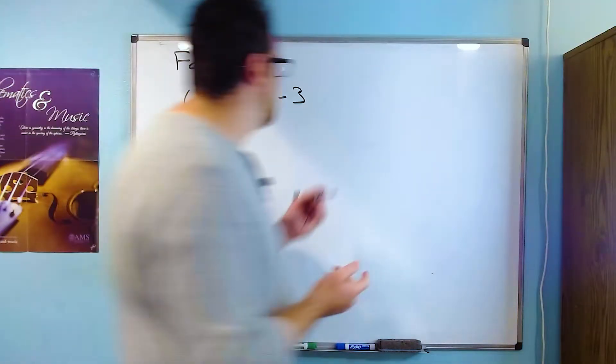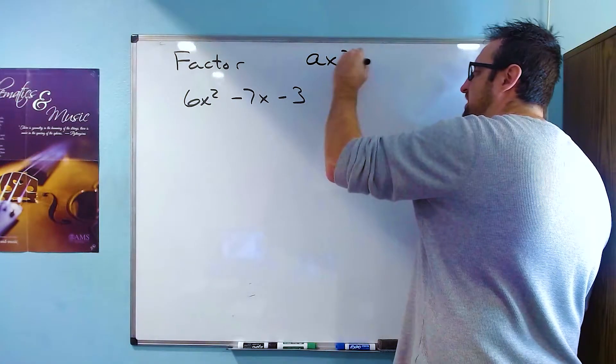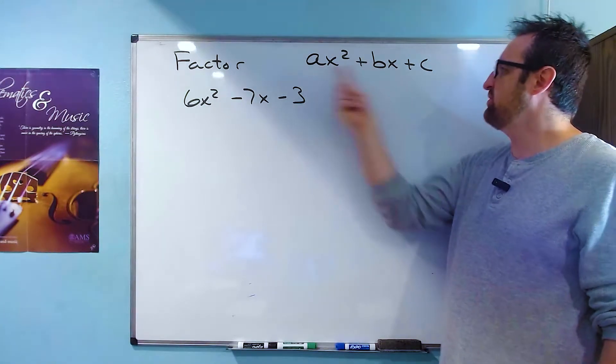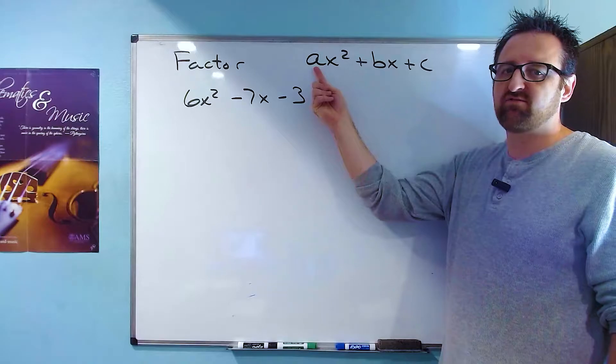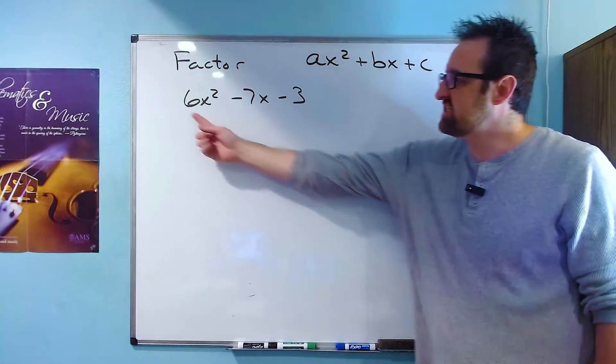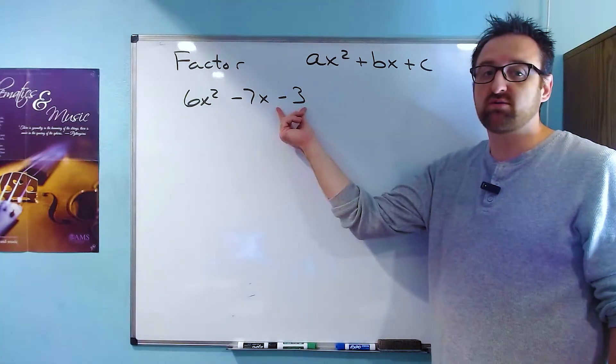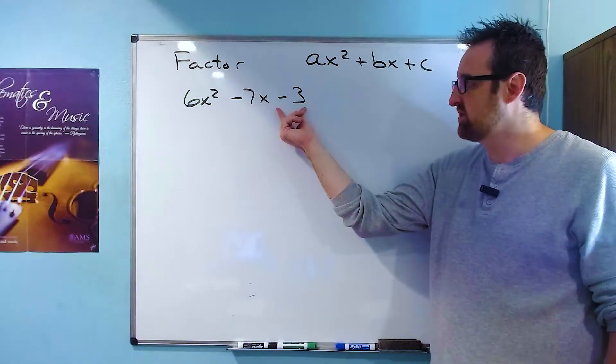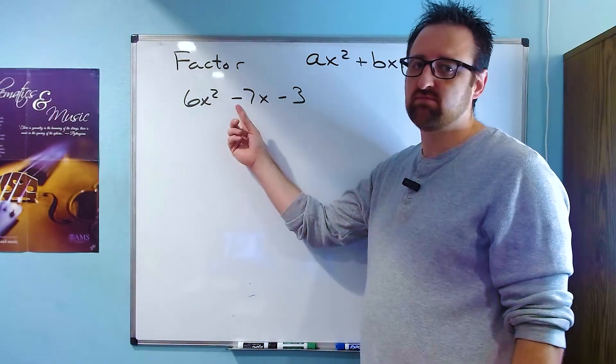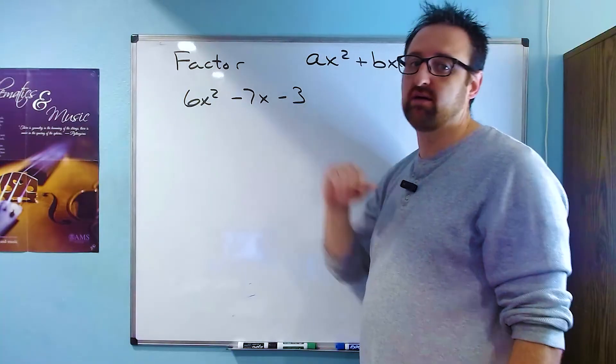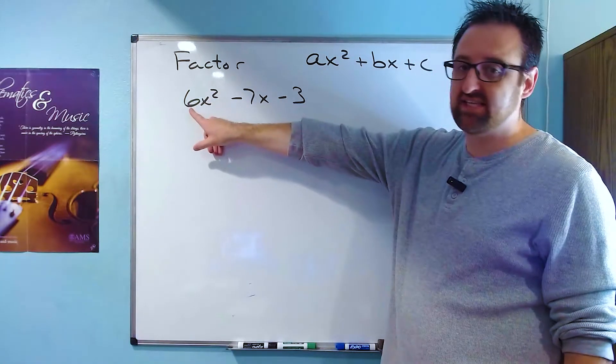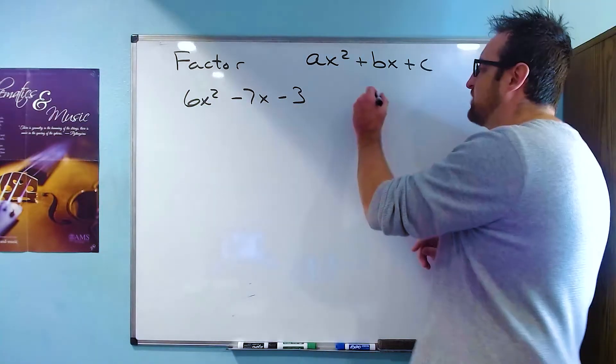The reason why it's called an AC method is that usually we write trinomials when we don't know the coefficients as ax² + bx + c. So the AC part is supposed to help you remember to take the product of the first and last term here, this A times the C. In this case here, we'd be looking at 6 times negative 3. It's important to recognize that you keep the sign with it. All these subtractions are really adding negatives anyway, and so these minuses are attached, glued to that number to their right. So here we're going to take a look at the AC product, the 6 times the negative 3, and we're going to get negative 18.